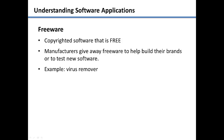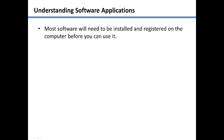Most software that you purchase or download will need to be installed on your computer. During the installation process, you will need to register and activate the software application. Many manufacturers will not let you use the software until you perform these steps. This prevents users from installing the software on more computers than is allowed.